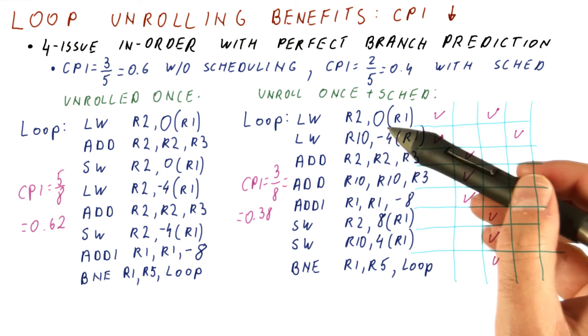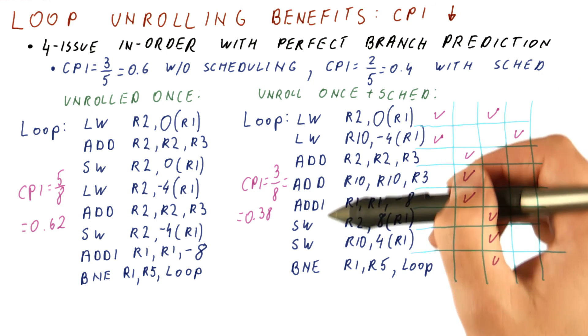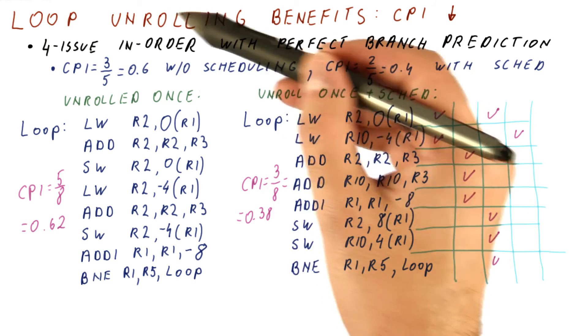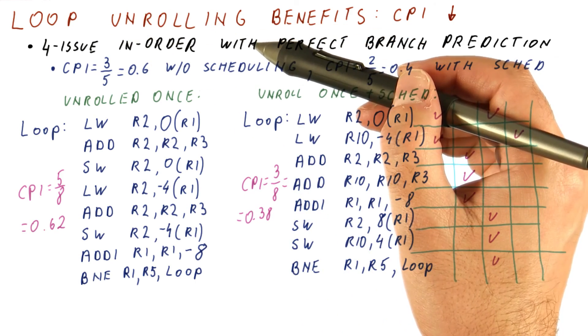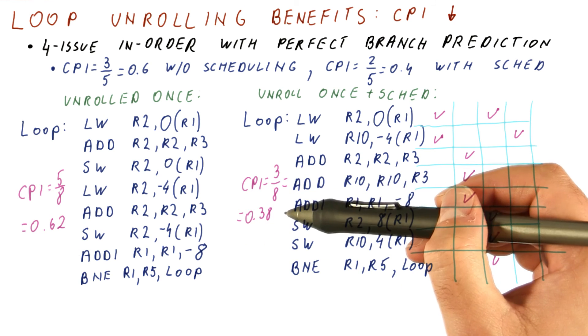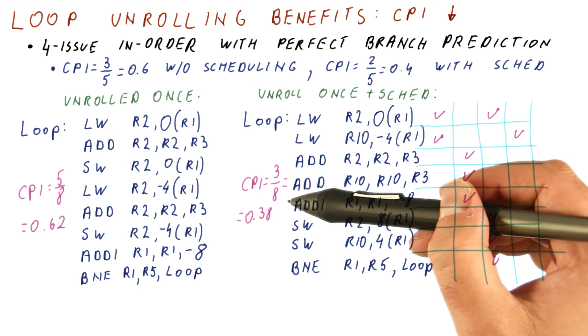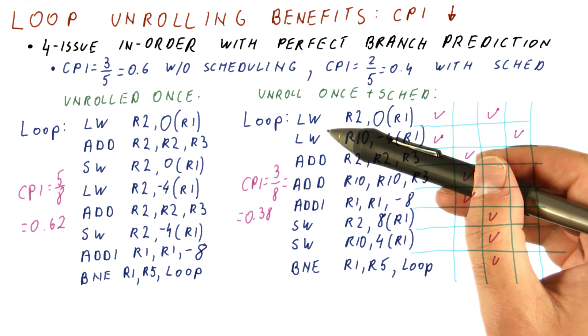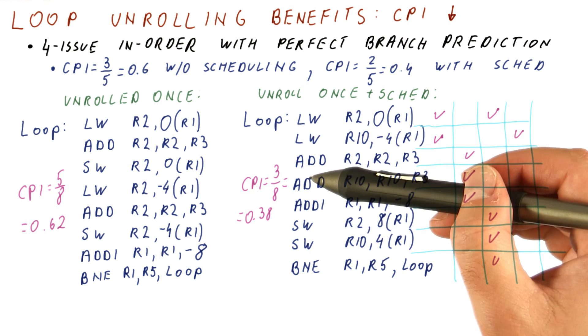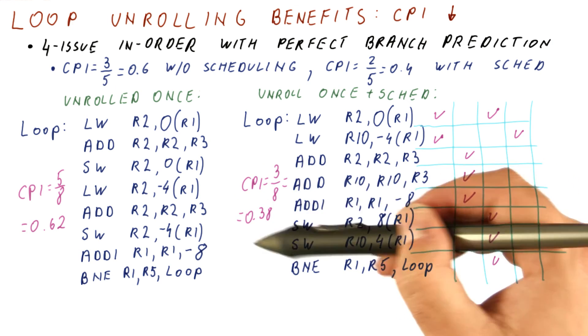So the more we unroll, the more parallelism we can get, simply because there is now more instructions, among which we can try to find independent ones. Keep in mind that unrolling already reduced the number of instructions, and with scheduling, it allows us to also reduce the CPI. So it kind of creates a double whammy for performance improvement. Our execution time gets reduced both because we have fewer instructions, eight instructions per two iterations, as opposed to five instructions originally for one iteration. And also, after scheduling, it gives us usually a better CPI.